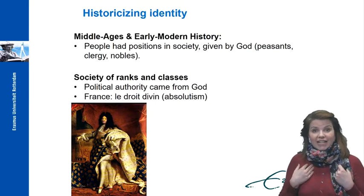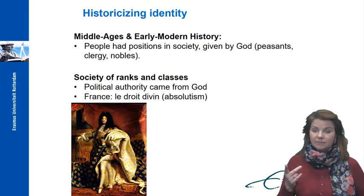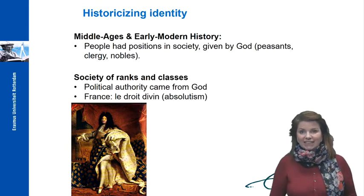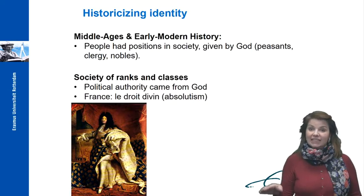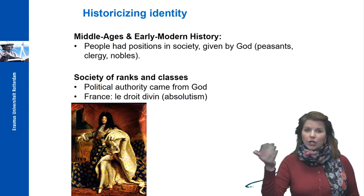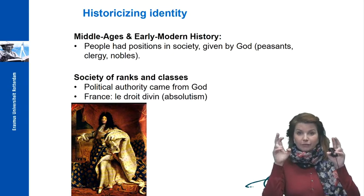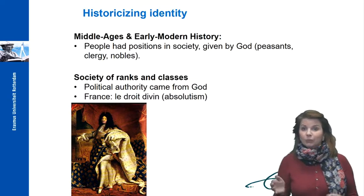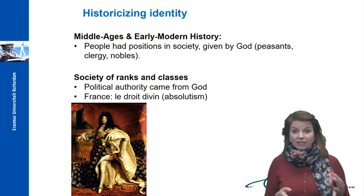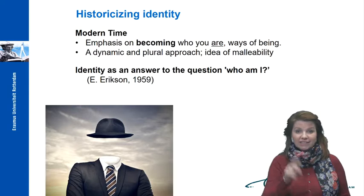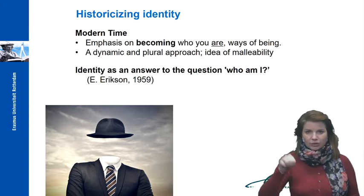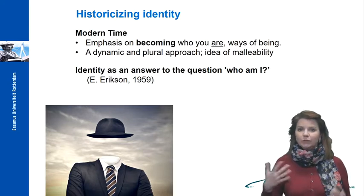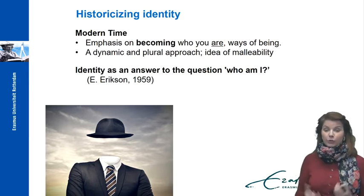For us as historians, it is also important to historicize the term identity. In the Middle Ages and in early modern history, the term identity as we know it did not exist. People had positions in society that were given to them by God, such as farmers and nobles — people had a nature, a character, or a self. Political authority also came from God. In this fixed society with ranks and classes, you could not just change your rank. But this changed in modern times, when emphasis was placed on becoming who you are — ways of being. A dynamic and plural approach became leading: the idea of creating and making identities, and improving yourself and society.